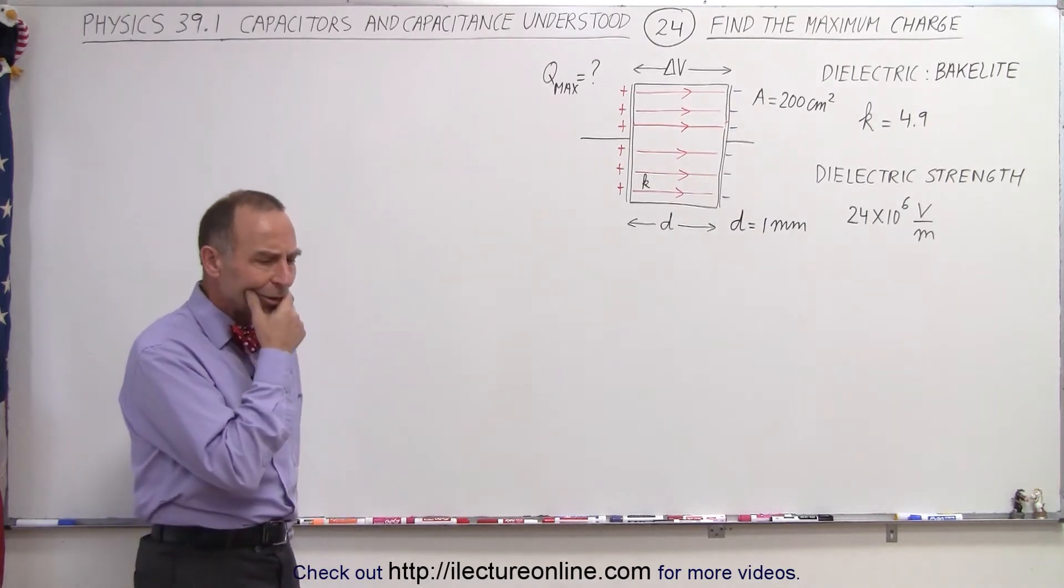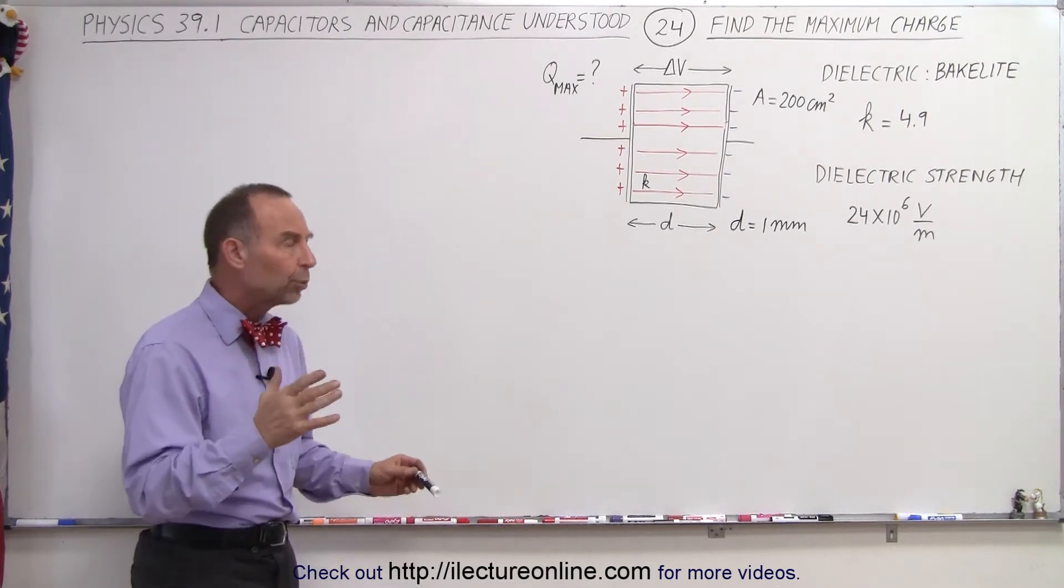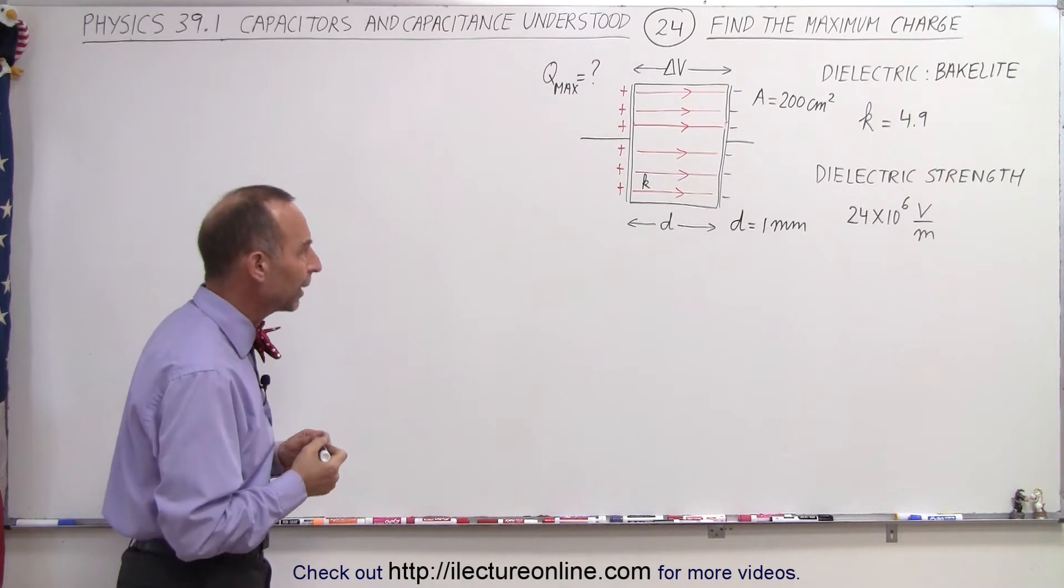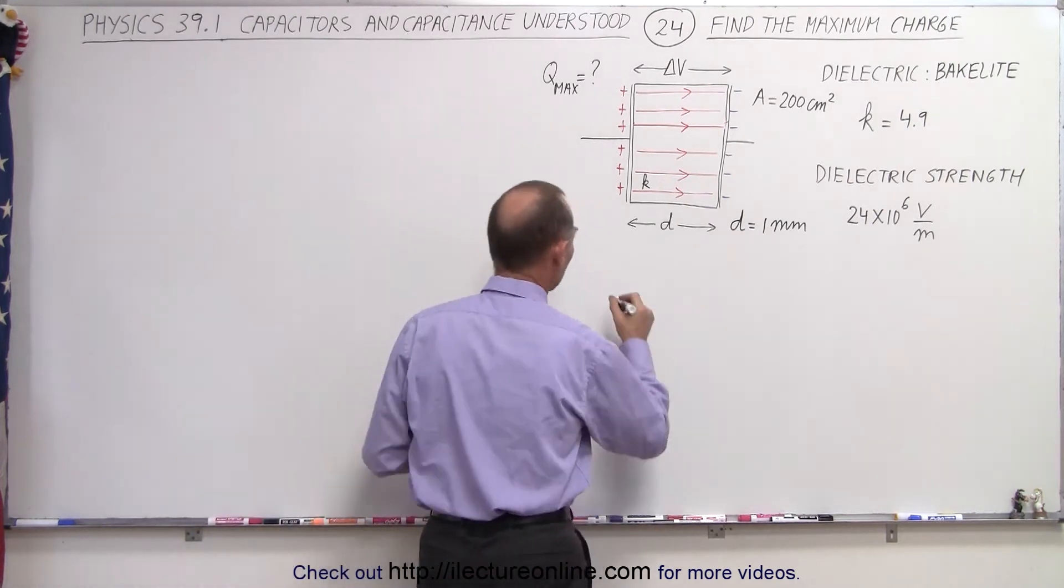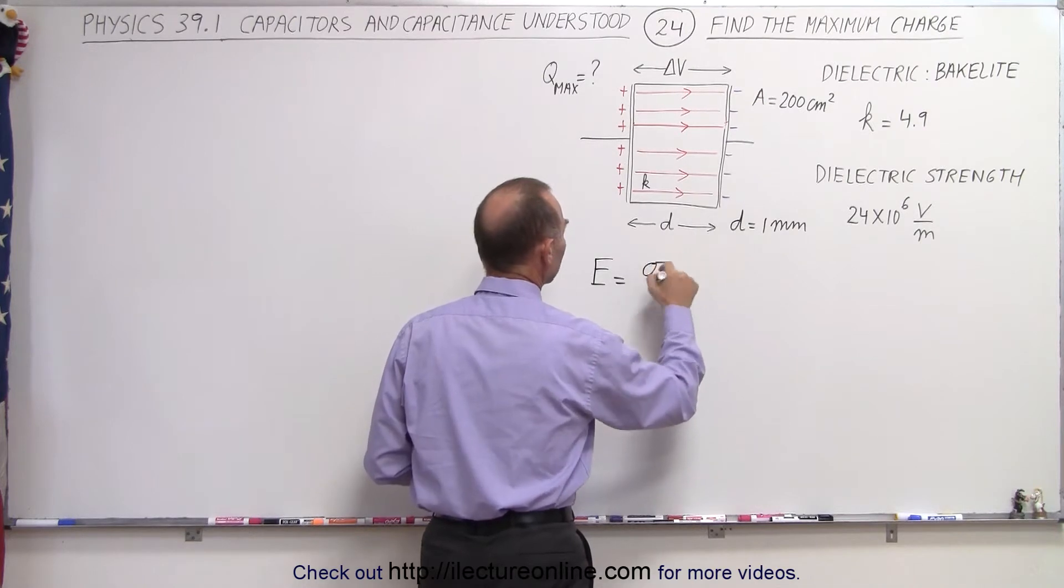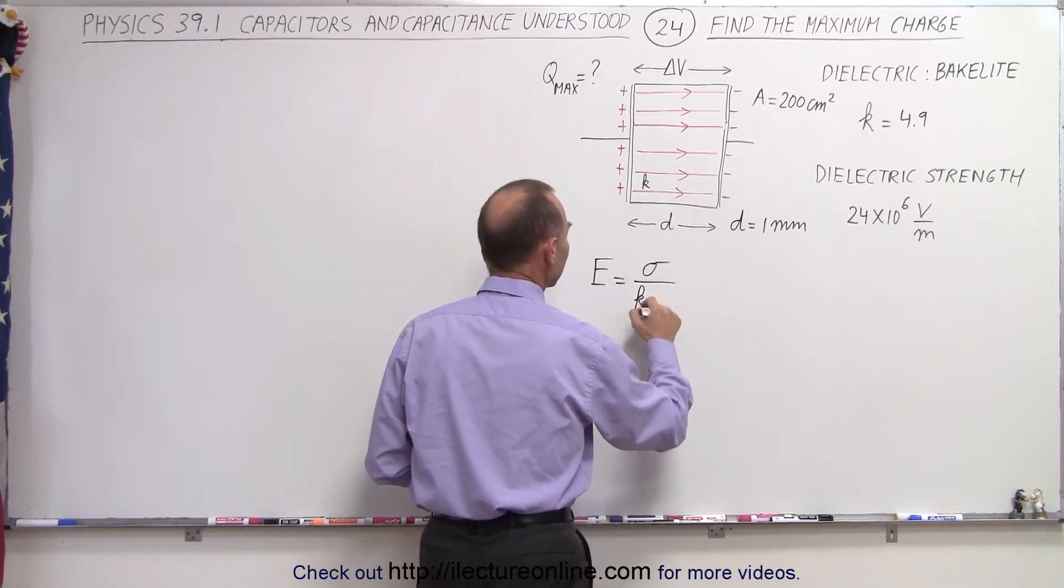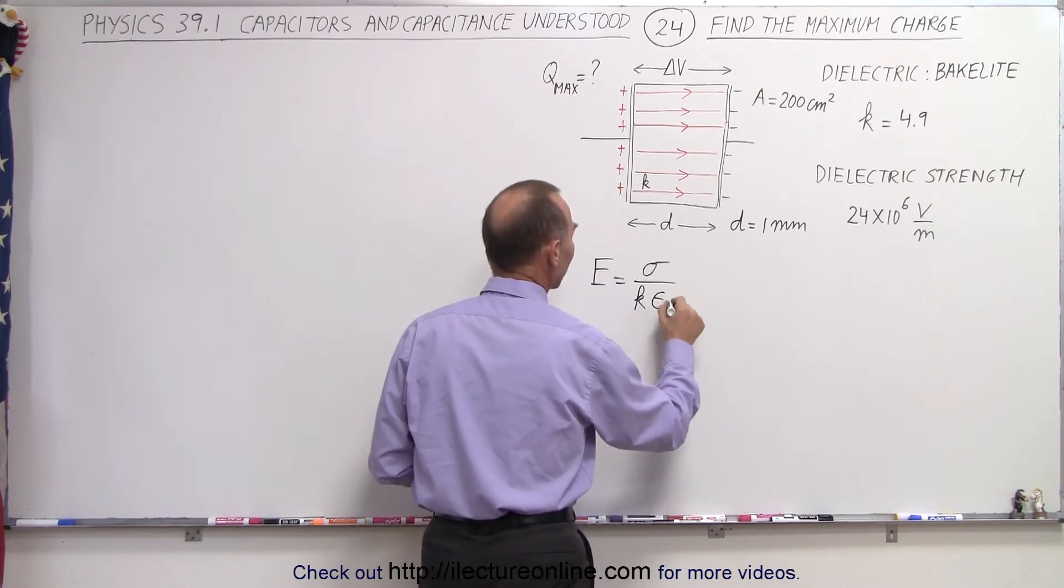So in this case, we're looking for the maximum charge. And there's a relationship between the electric field between the plates and the charge we put on the plates, and that can be found as follows. We know that the magnitude of the electric field is equal to the surface charge density onto the plate divided by the dielectric constant times epsilon sub nought.